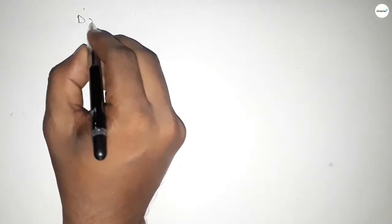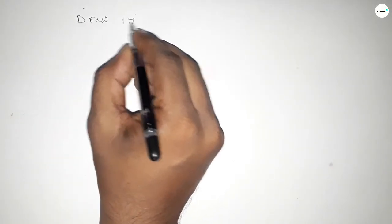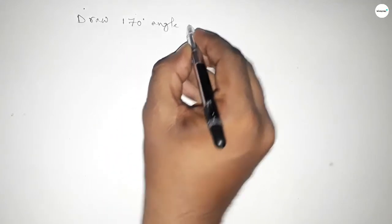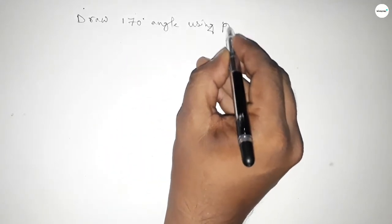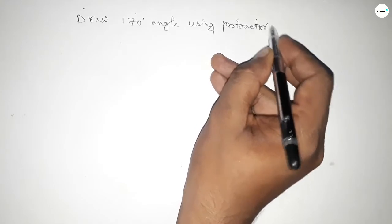Hi everyone, welcome to SSR Classes. Today in this video we have to draw a 170-degree angle by using a protractor.